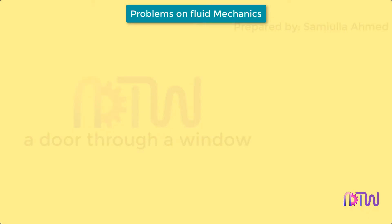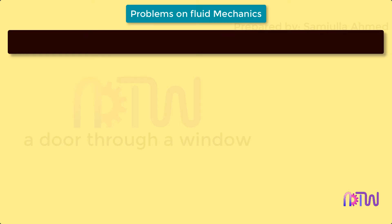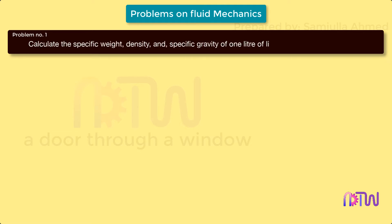In this video on fluid mechanics, we will see how to solve problems to understand how to find different properties of fluids. Let us consider Problem Number 1: calculate the specific weight, density, and specific gravity of one liter of liquid which weighs seven newtons.